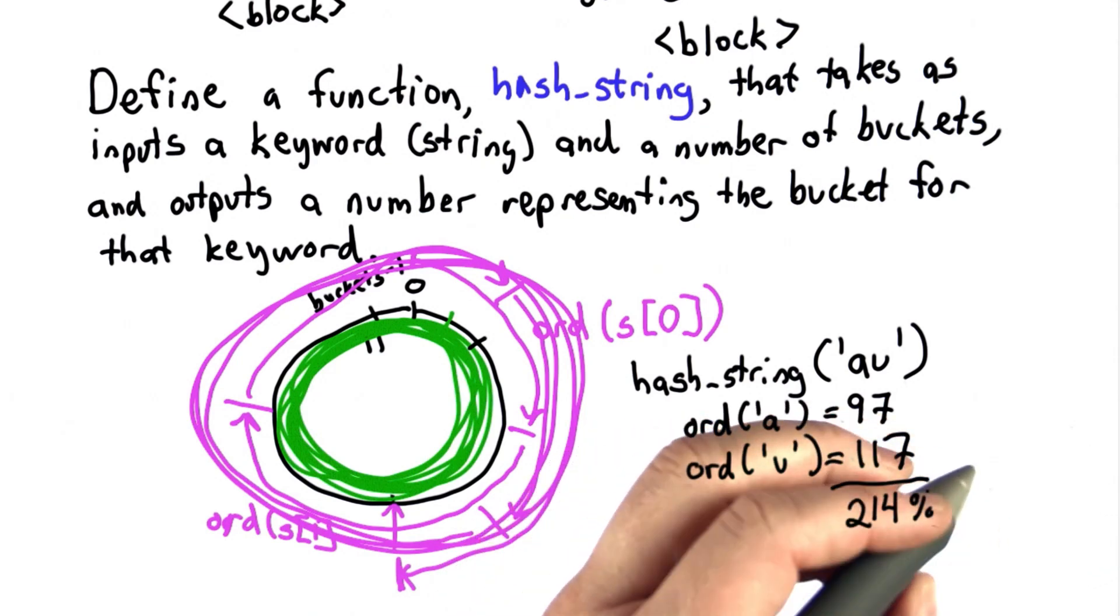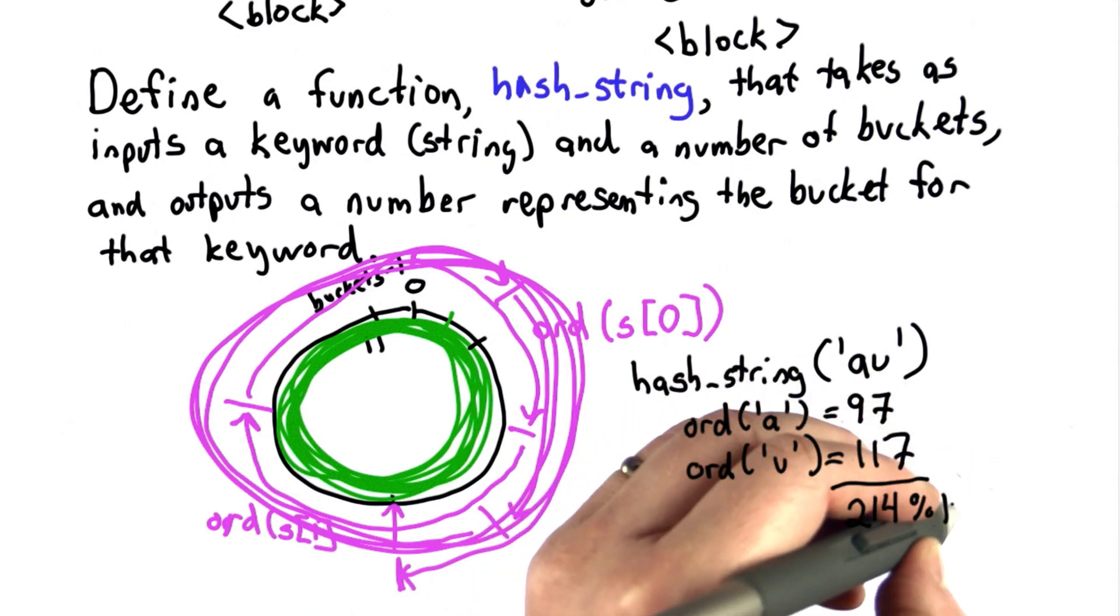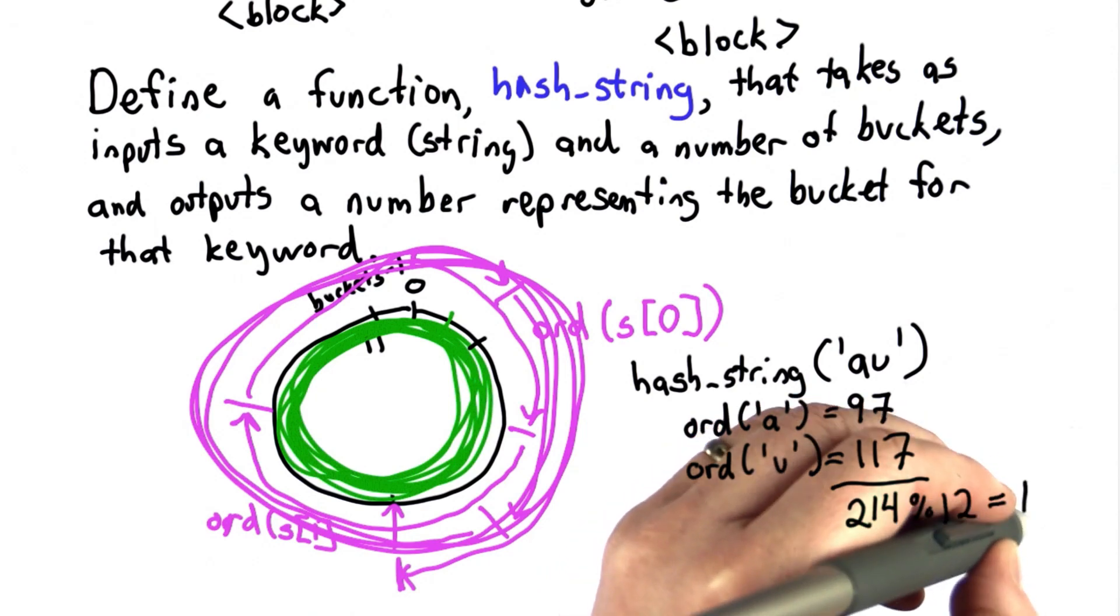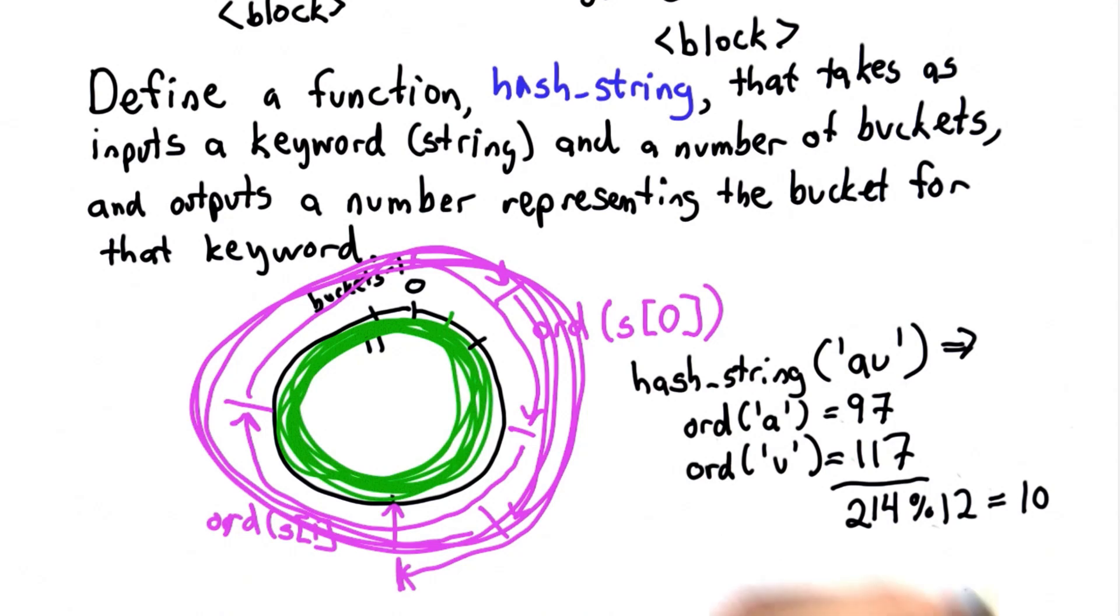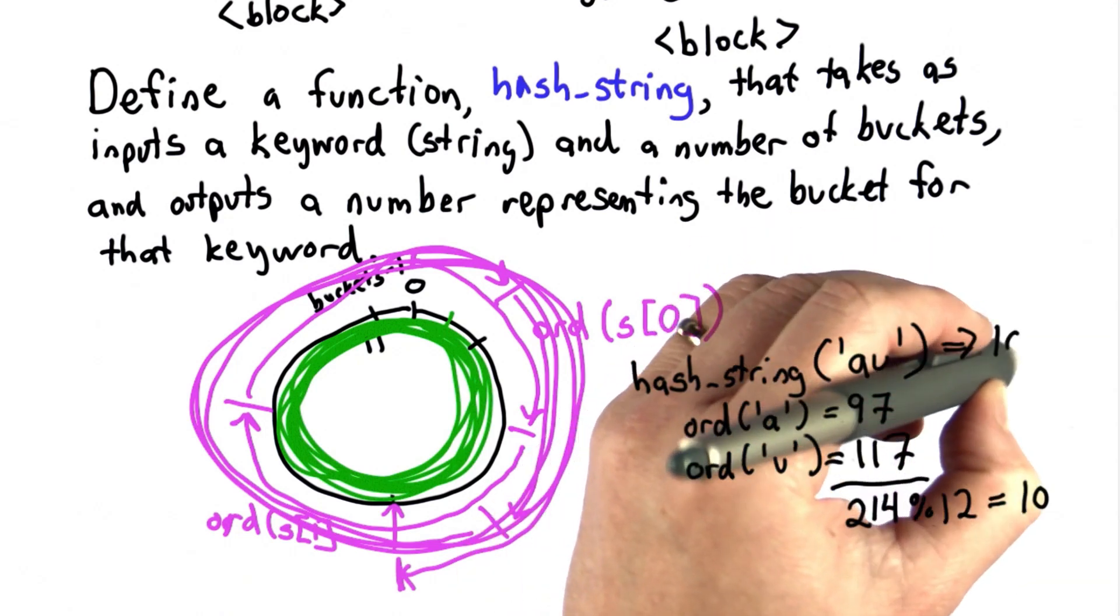And modulo the number of buckets, which is 12 here, we should get 10. So that string with two symbols doesn't end up in position 1 where the A would end up. It ends up in bucket 10.